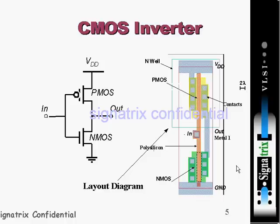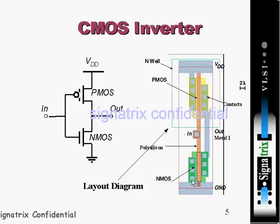Where active and poly overlap, that is where the transistor is formed. This here is VDD, and this is polysilicon — not metal, polysilicon. Where polysilicon and active meet, the transistor is formed, as shown with dotted lines. Some contacts have also been added here.